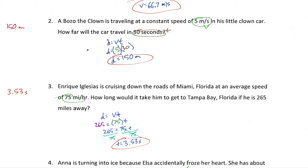Let's take a look at the next problem. We've got Bozo the Clown traveling at a constant speed of five meters a second in his little clown car. How far will the car travel in 30 seconds? Again, this is a quick problem because we don't have to deal with acceleration. I have one velocity — it's the average velocity, so we're assuming constant velocity. Dropping five meters per second in for V and 30 seconds for T, the formula tells us what to do: V times T, so five times 30 gives me 150 meters.